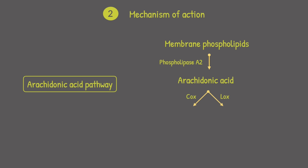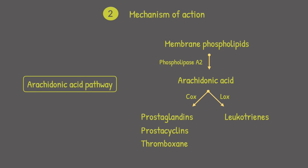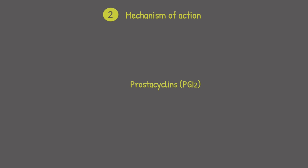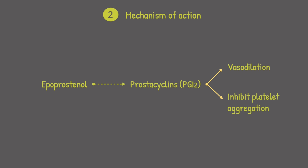Now for the mechanism of action, let's understand the basics of the arachidonic acid pathway. Phospholipase A2 converts membrane phospholipids into arachidonic acid, which then divides into the COX and LOX pathways. COX converts arachidonic acid into prostaglandins, prostacyclins, and thromboxanes, whereas LOX converts arachidonic acid into leukotrienes. We focus on prostacyclin because Epoprostenol is a synthetic prostacyclin.